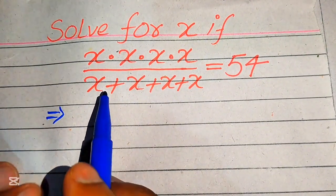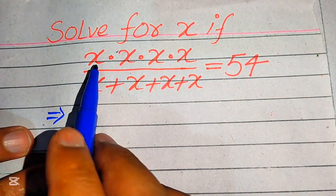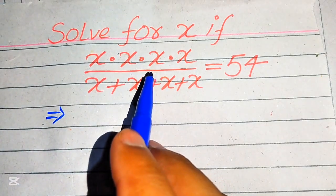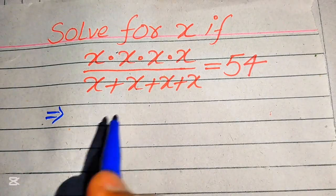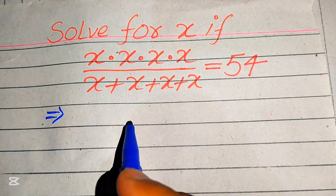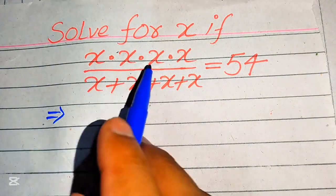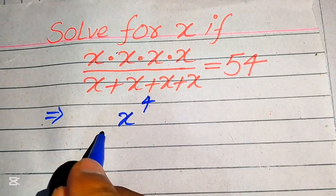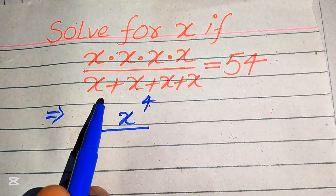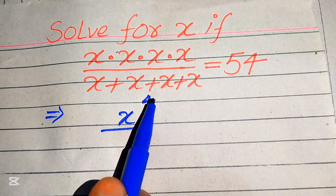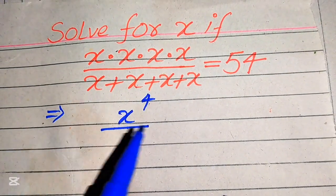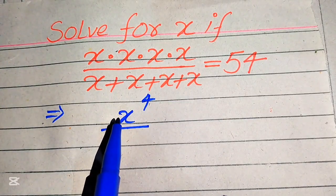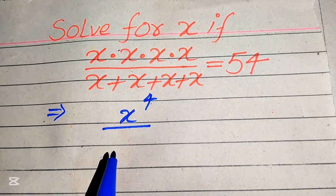Here you see that x is multiplied 4 times, so you know that if any number is multiplied 4 times we write its exponent as 4. So x multiplied 4 times is written as x to the power of 4. It is divided by x added 4 times, and the rule of addition is that when any number is added 4 times it equals 4 times that number.